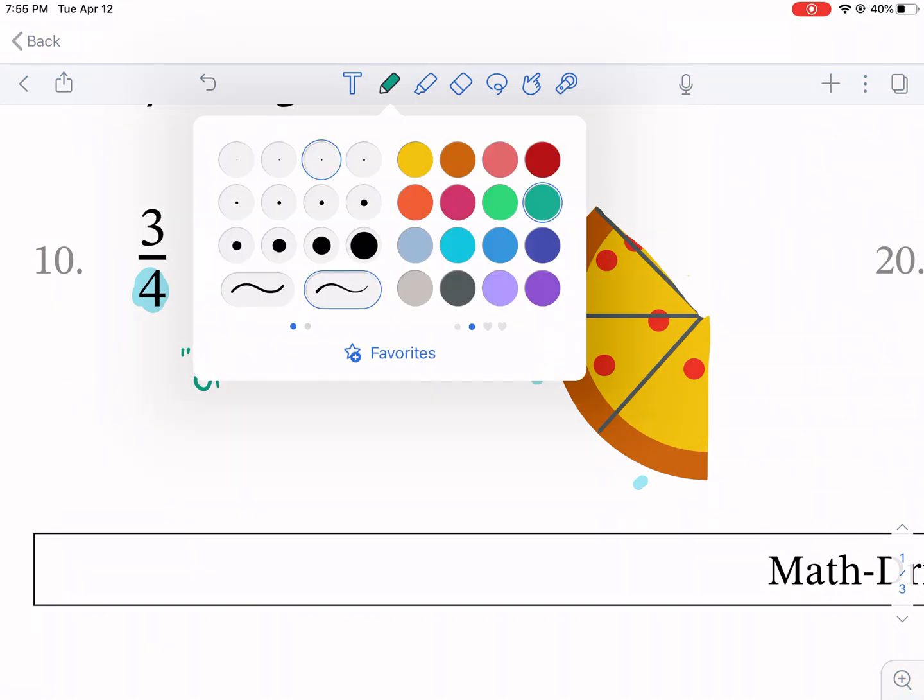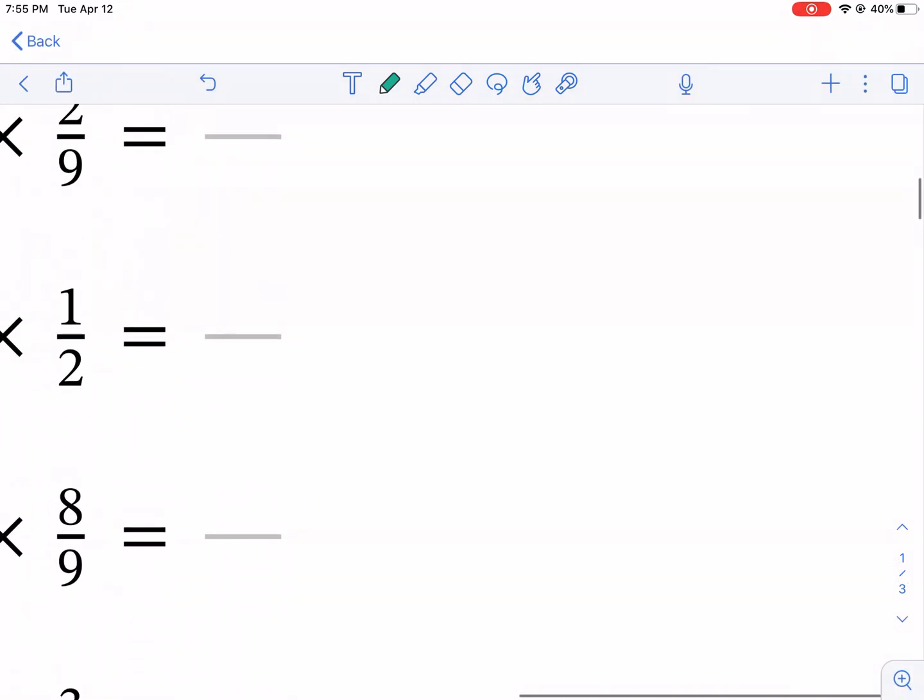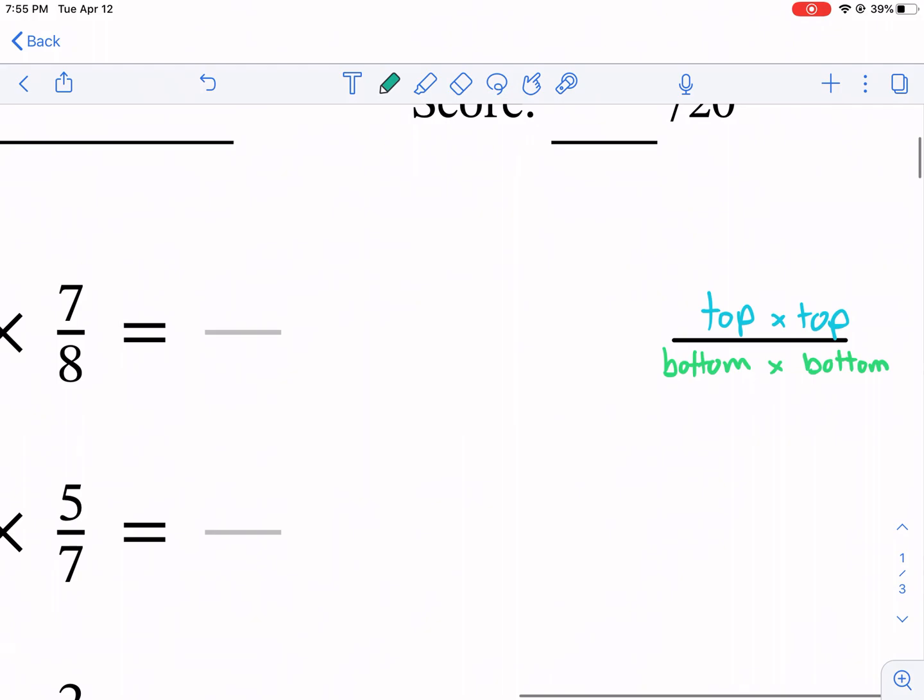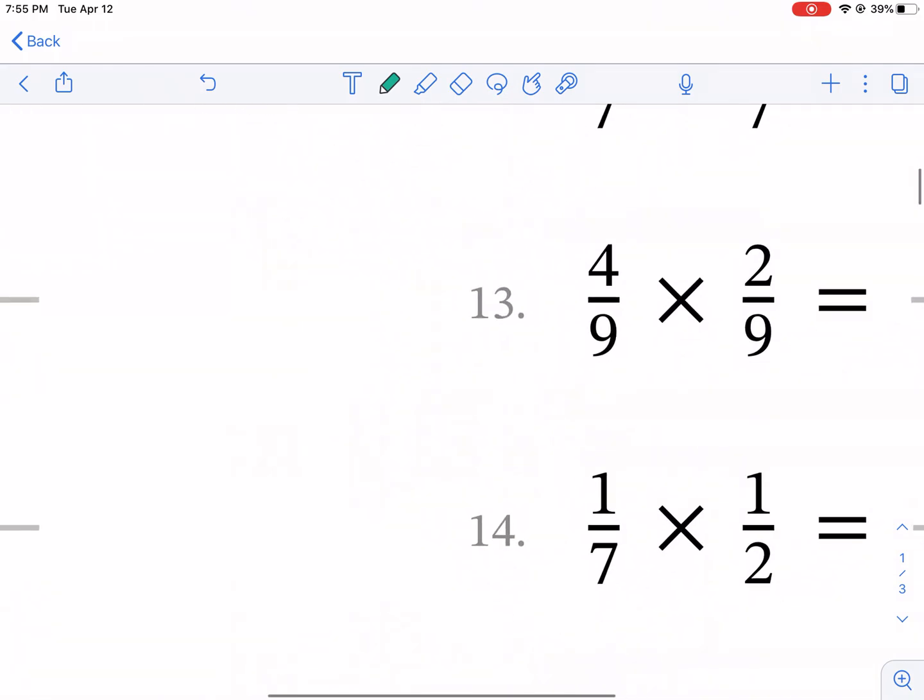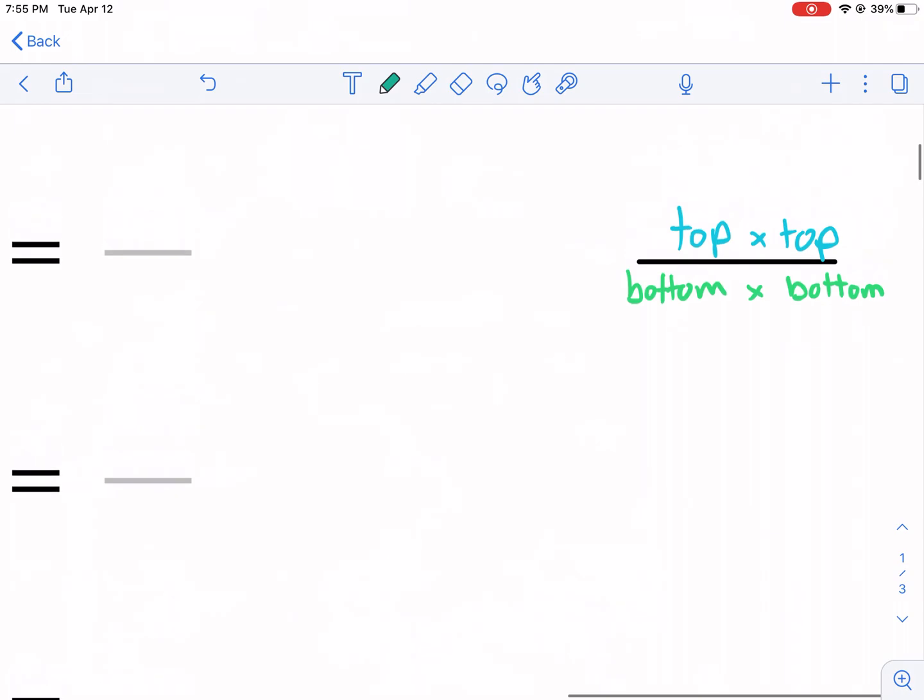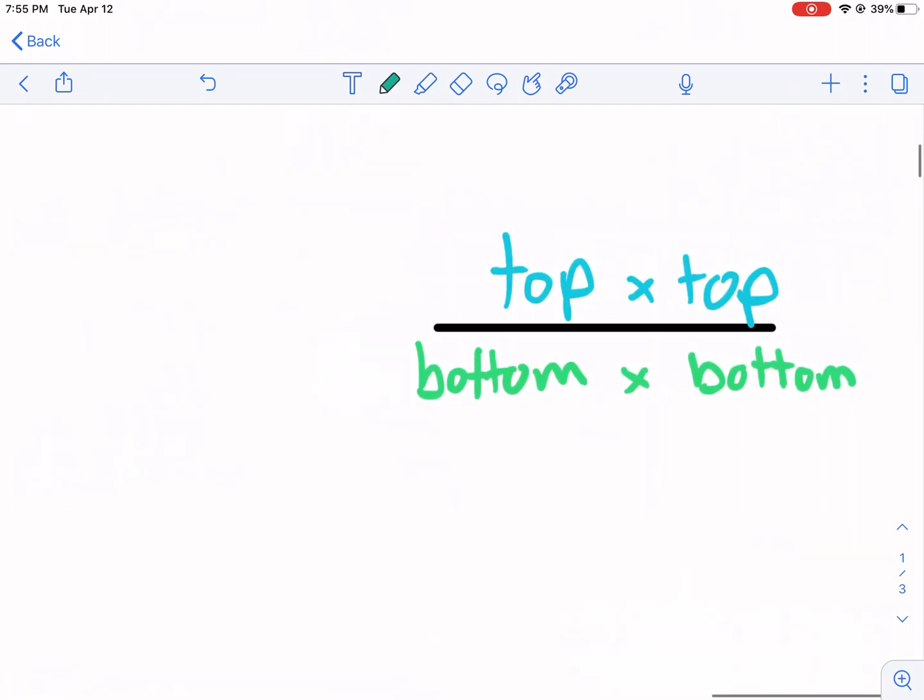So what we do with multiplying fractions is the following. Let me scoot up here. We do the top times the top and the bottom times the bottom. So the numerators times the numerators. Go ahead and pause here if you want to see that. Top times top, bottom times bottom.